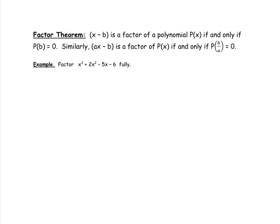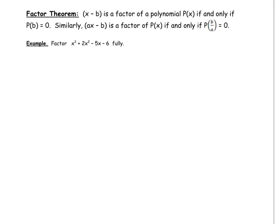Here is our factor theorem. It tells us that x minus b is a factor of the polynomial p of x if and only if p at b equals 0. So we're going to use the remainder theorem first to find out what value gives a remainder of 0, and then we know that x minus that value is actually a factor. We can deal with binomials that have coefficients, and the idea is the same: if we sub in something like b over a and get a remainder of 0, then we know that ax minus b is a factor.